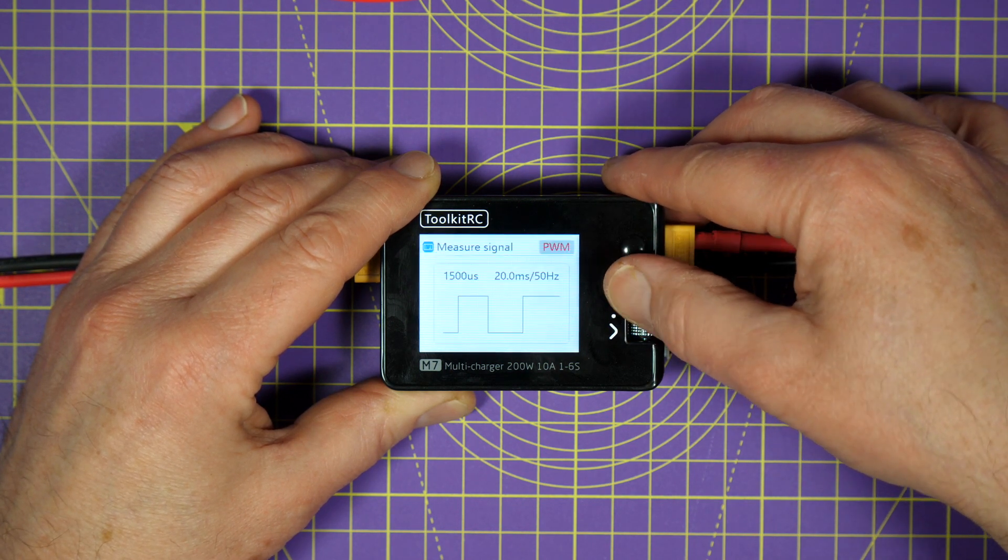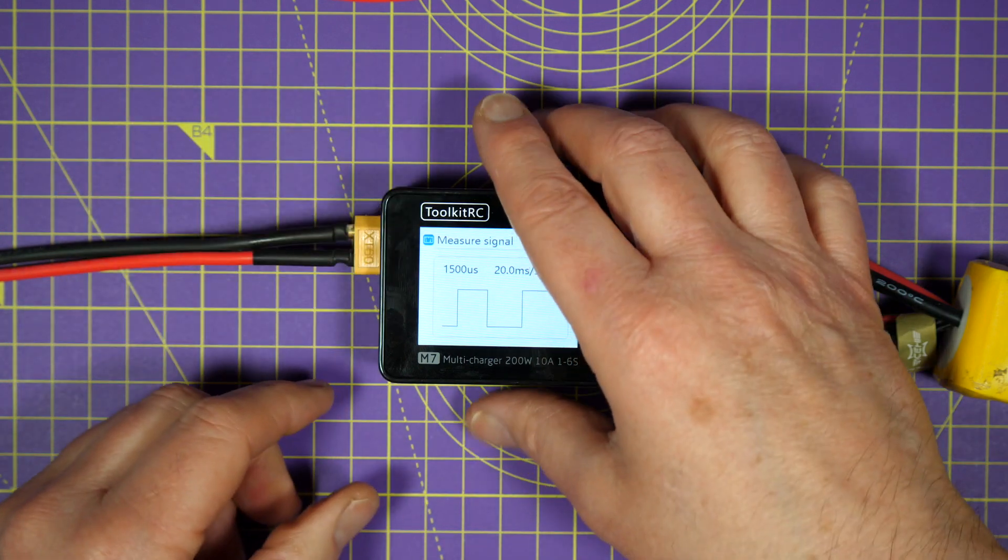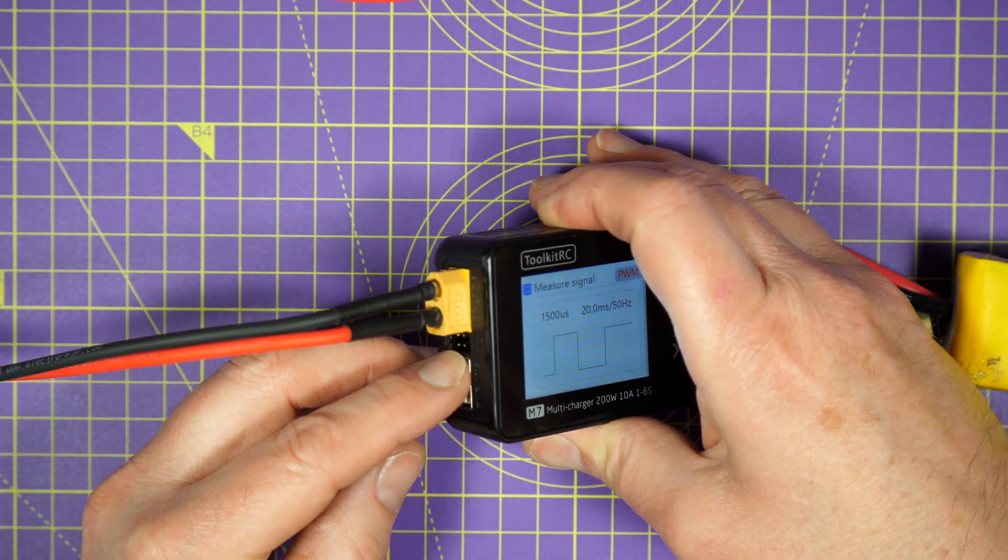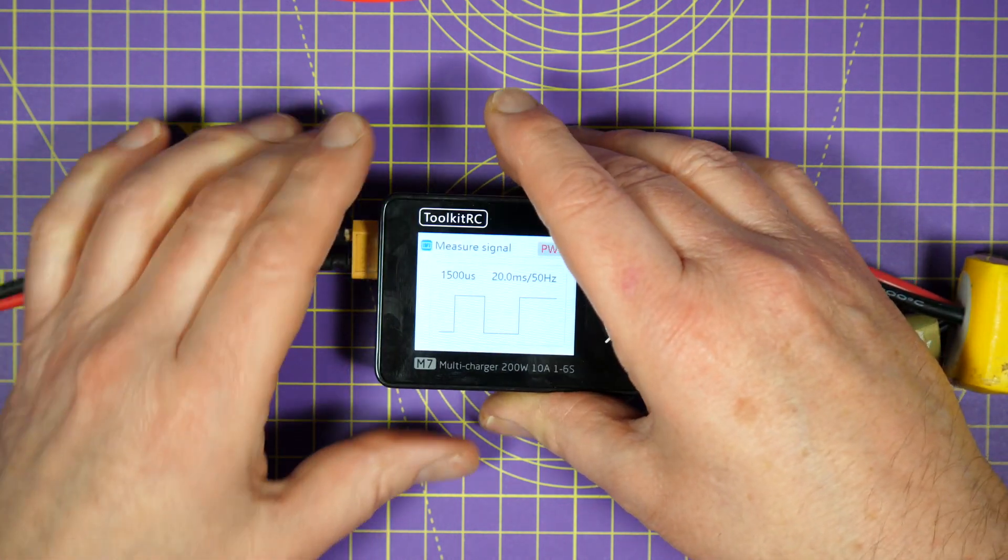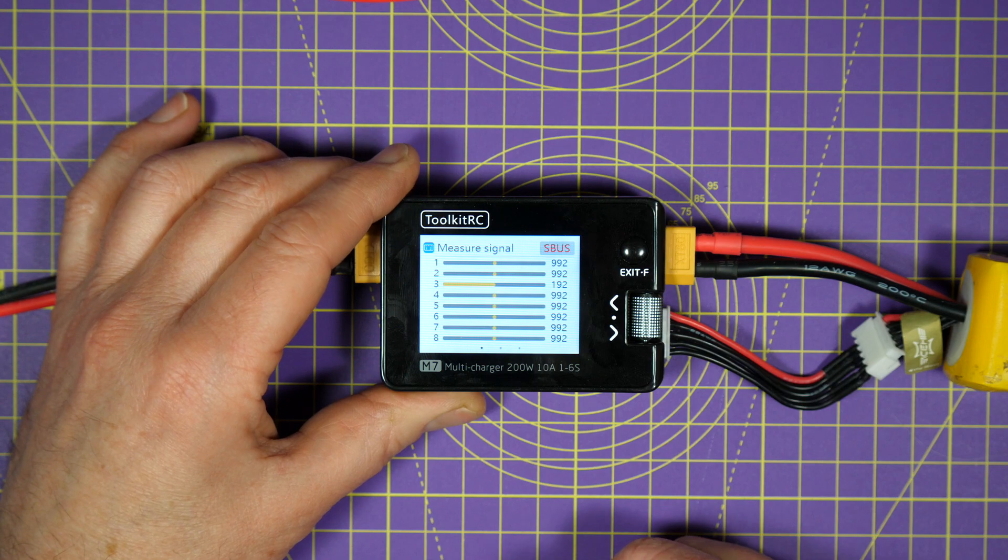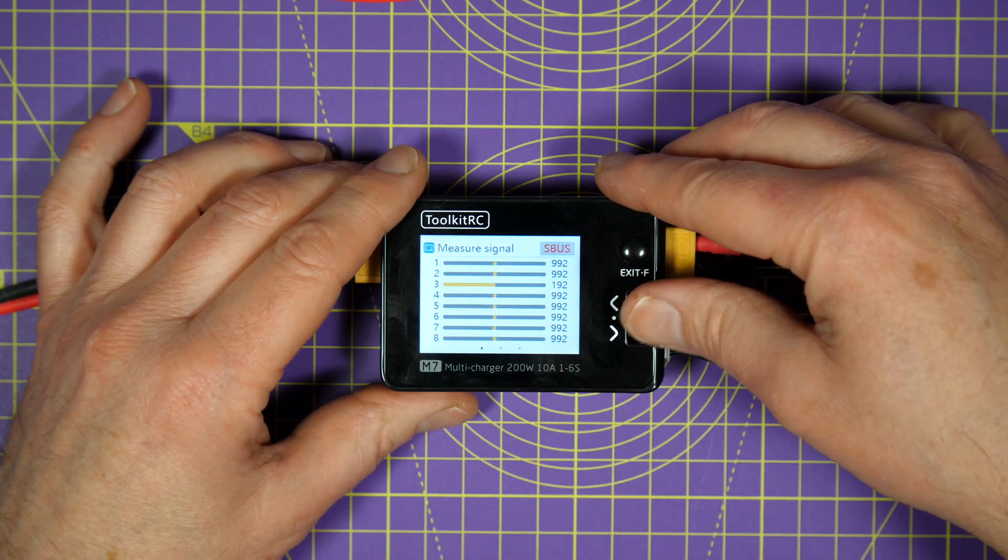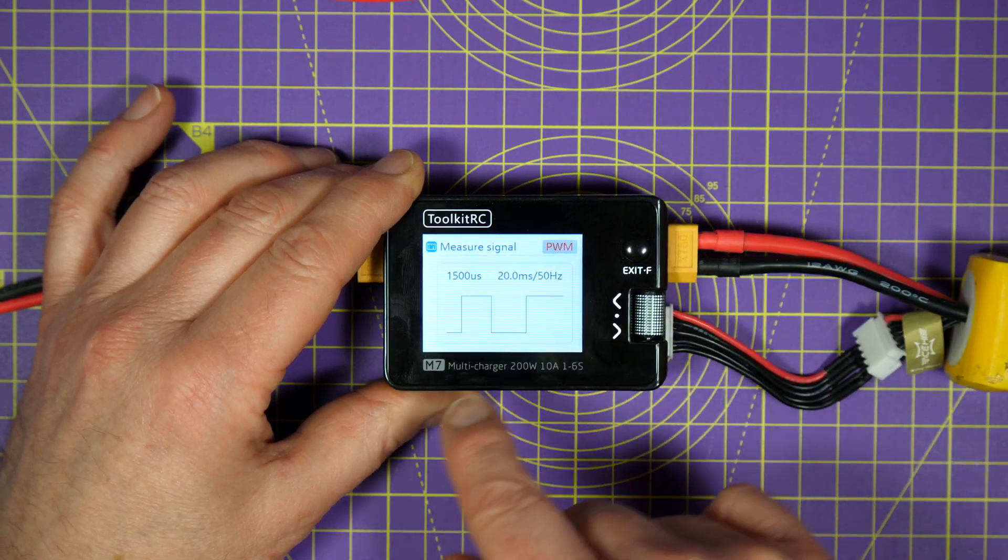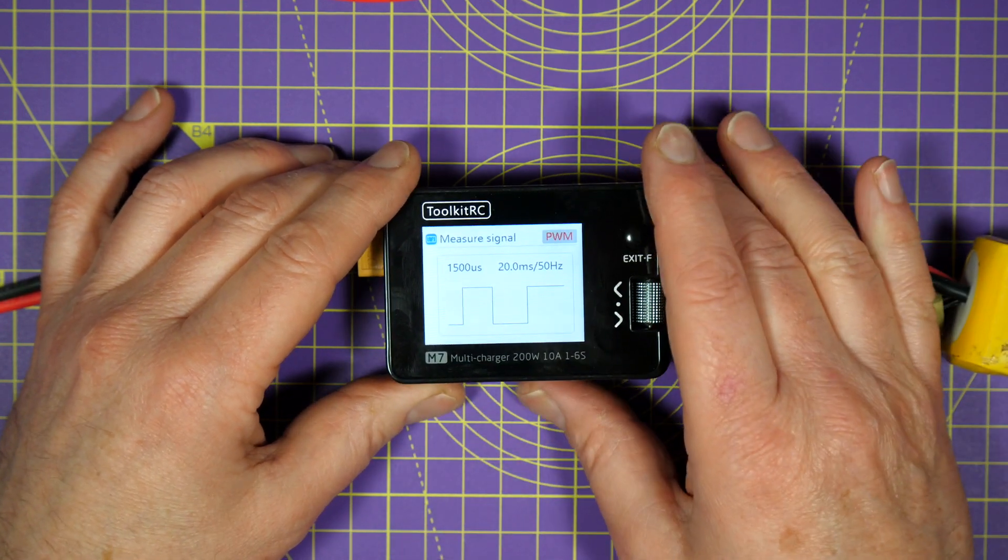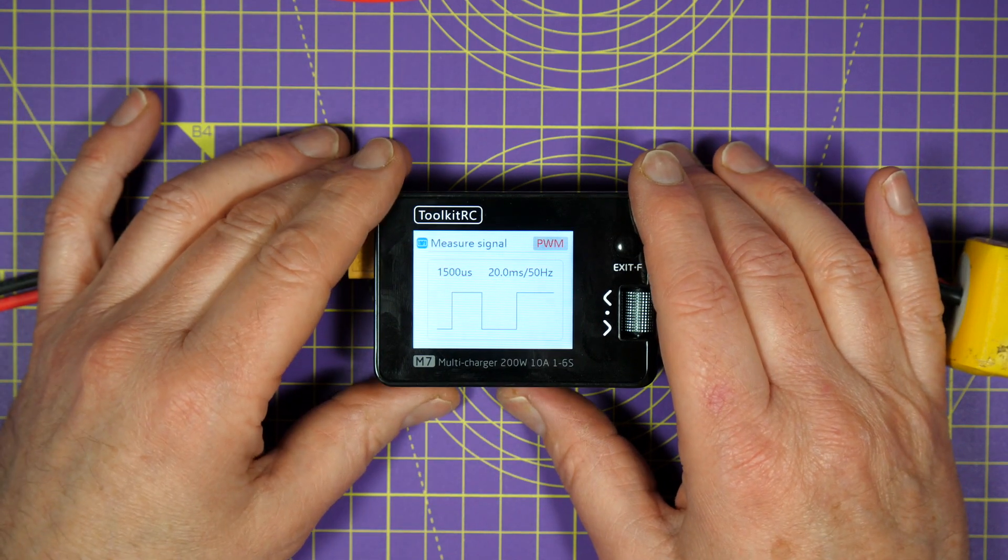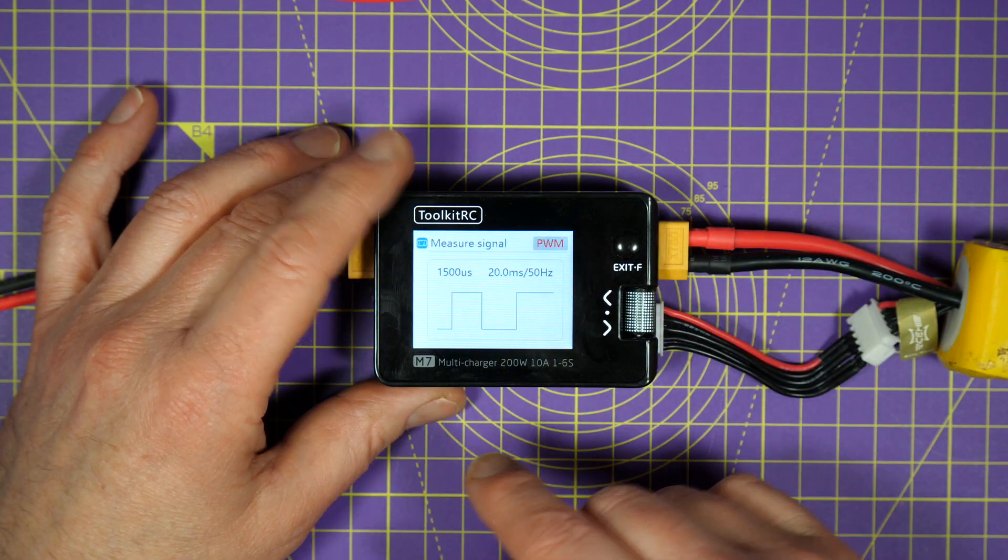So let's long press and get into that again. Now, what we can do is on this port here, you can plug anything in that's—you could have a receiver that's putting out a PWM signal, PPM, or SBUS, for example, and you can see those signals on this little graphic display. So it's a great way to help you debug your electronics and find out where things aren't working. Very useful.